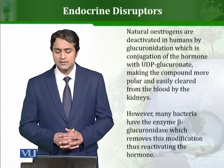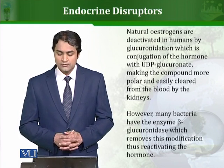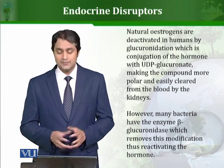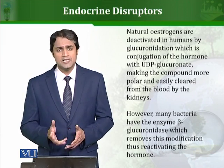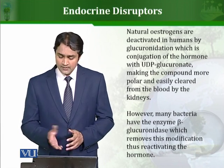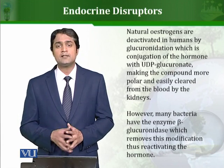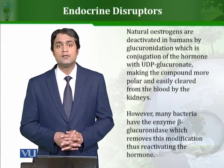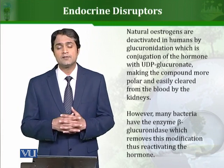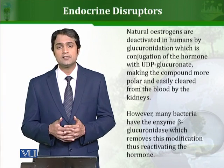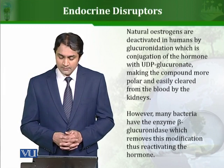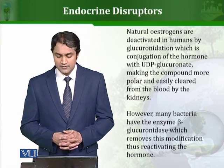Natural estrogens are deactivated in human beings by a process called glucuronidation, which is the conjugation of the hormone with UDP-glucuronate. This conjugation reduces toxicity, makes the compound polar, and allows it to be easily cleared and excreted from the body through the kidneys.